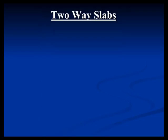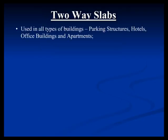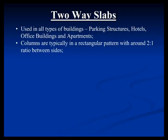Today we're going to talk about two-way slab designs. In a very generic sense, they're used in all types of buildings, whereas one-way slabs and beams are typically used for garages due to the depth of the beams. Two-way slabs can be used for any type of application — from garages to hotels, offices, apartments. The columns are typically in a rectangular pattern, and a two-to-one ratio is kind of the max. When one side is significantly longer, the slab thickness is based on the longest dimension, so it's efficient in one direction but overly thick in the other.